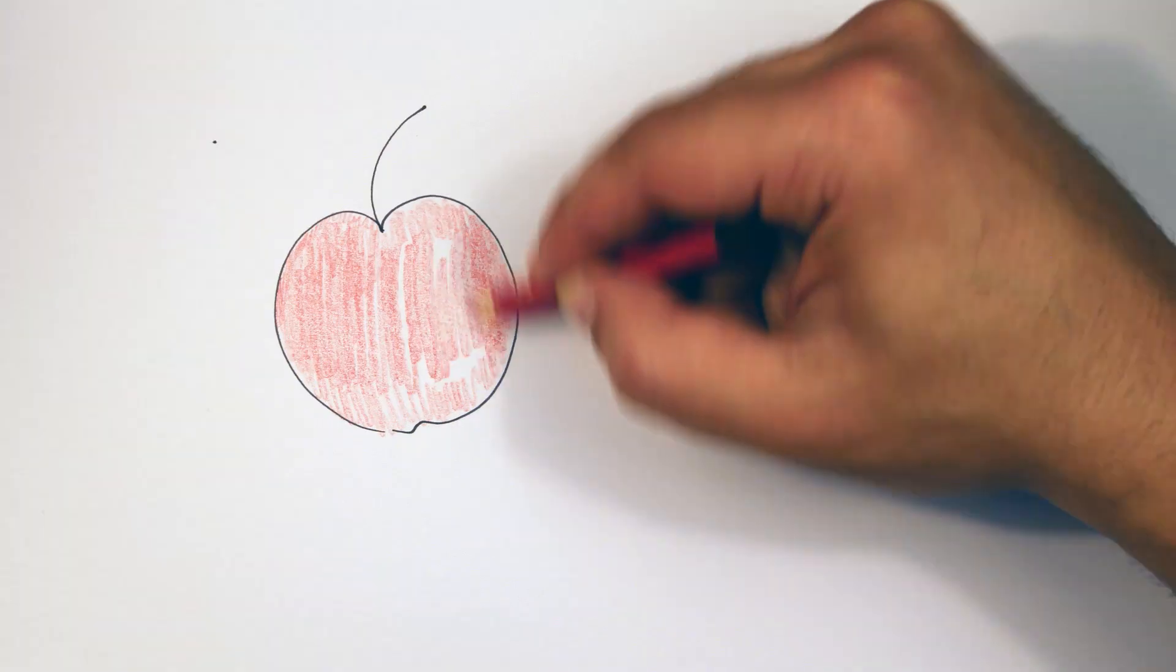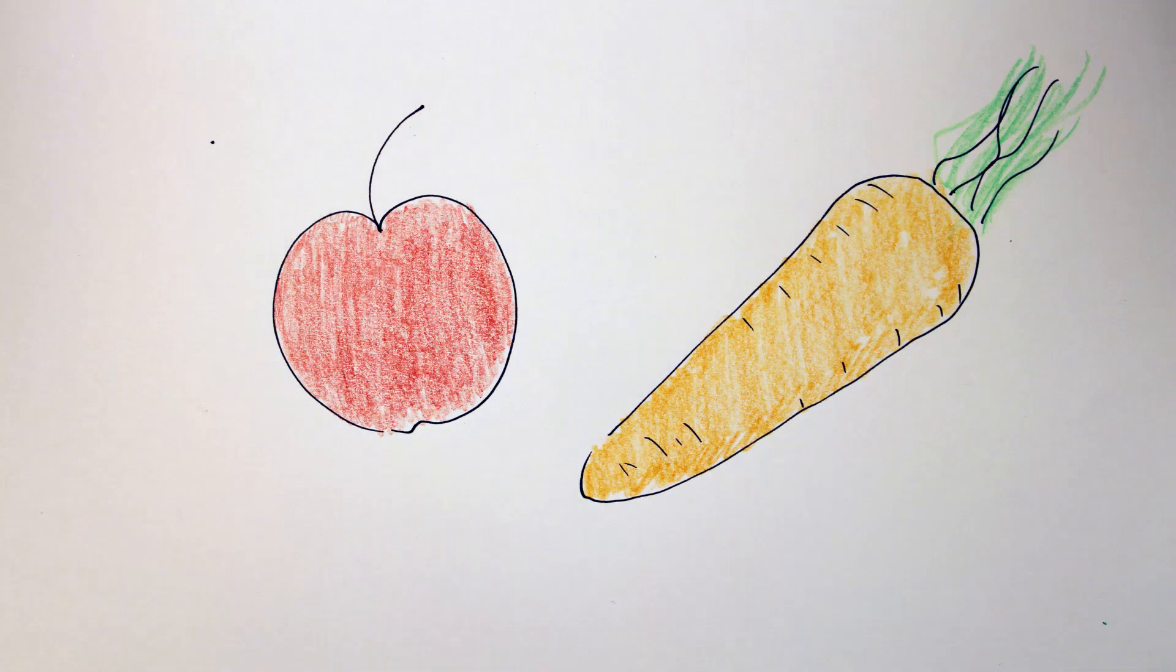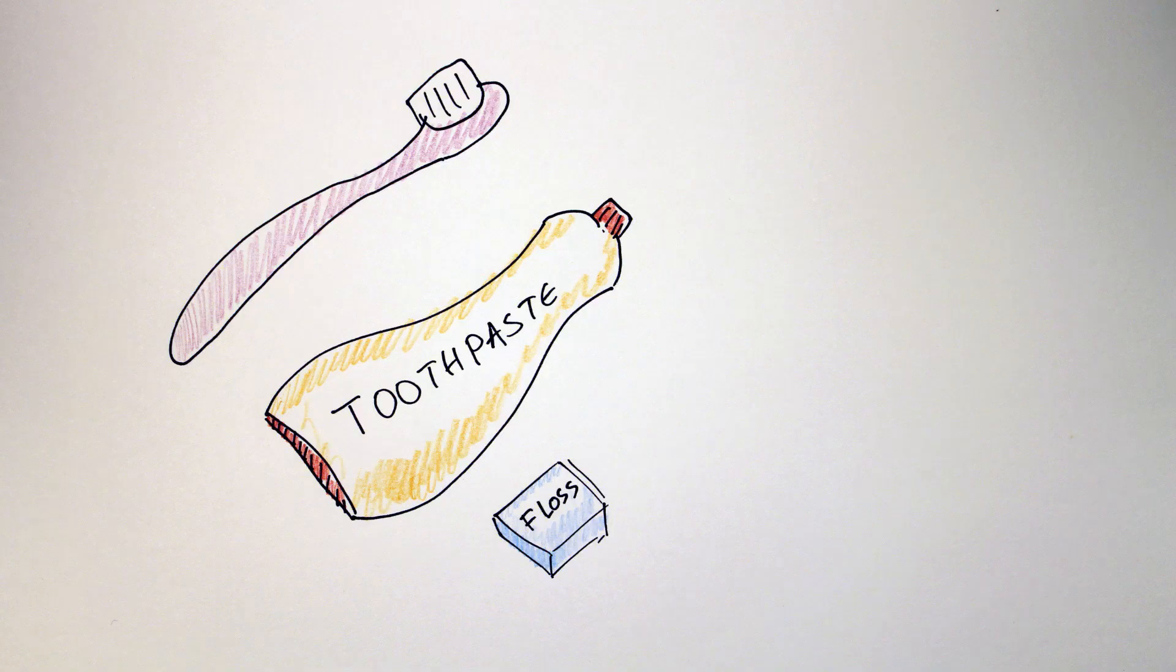Crisp foods, such as apples and carrots, can help in scraping bacteria off of your teeth. Do that more often. And finally, keep up your good habits of regular brushing and flossing.